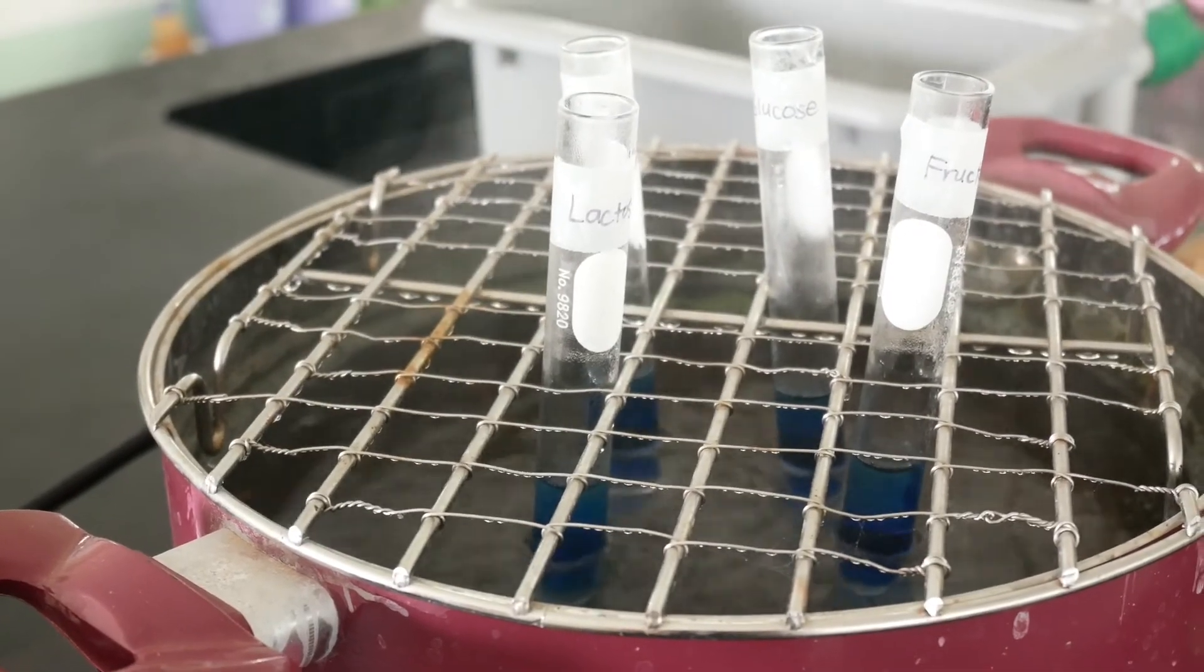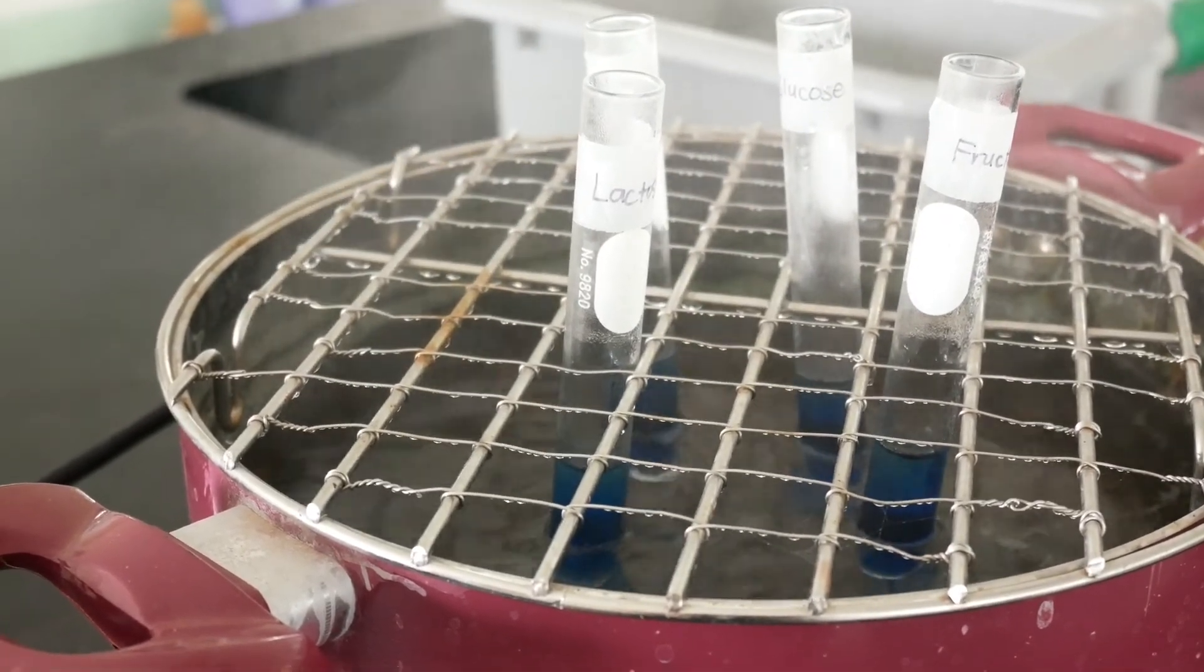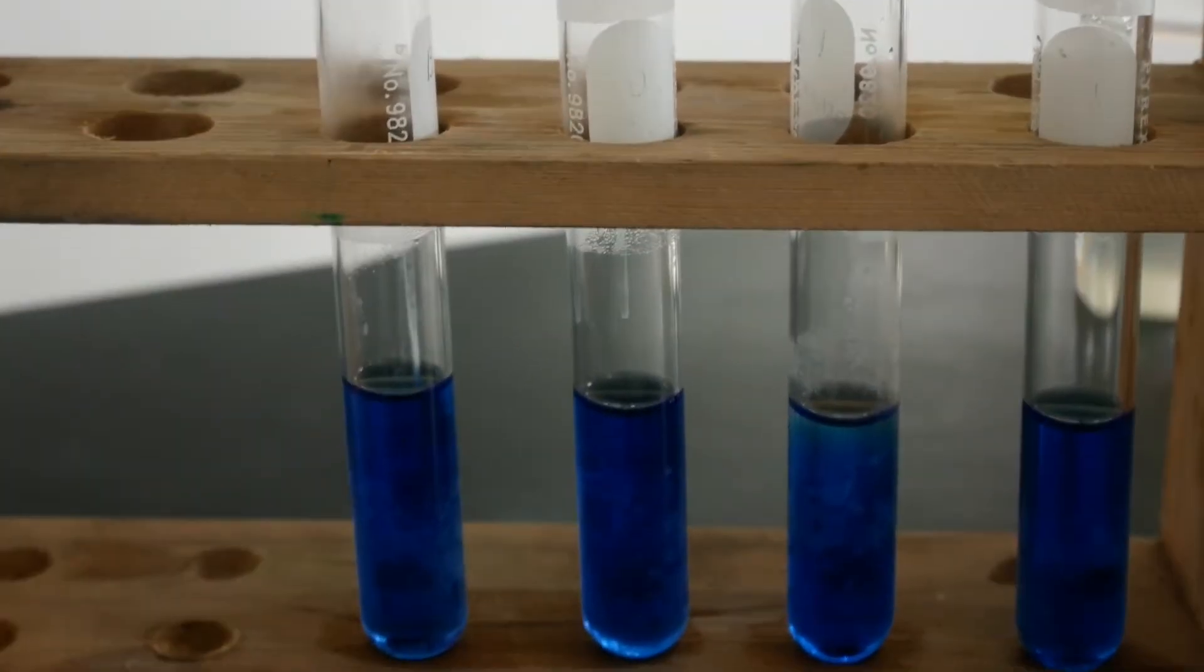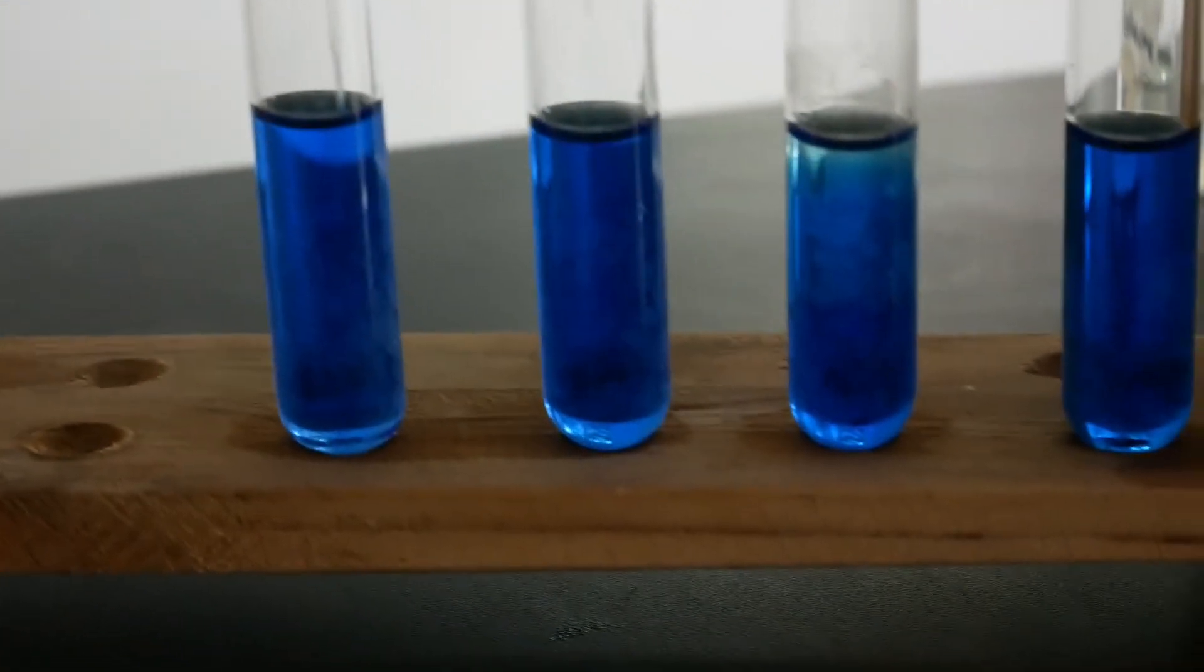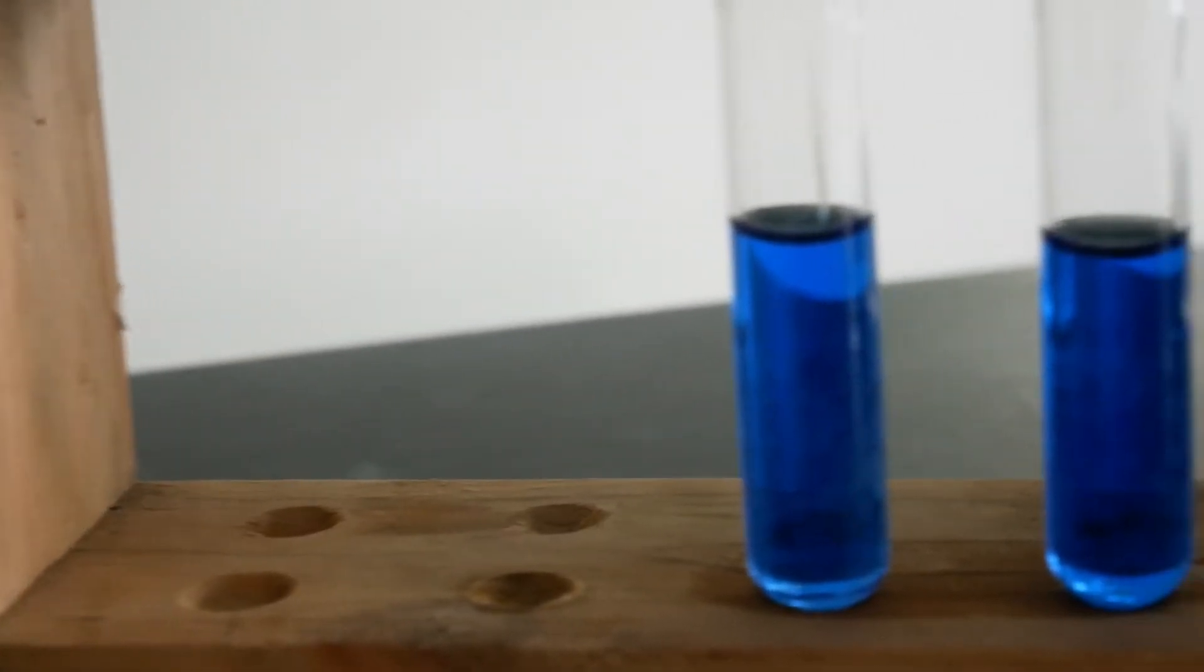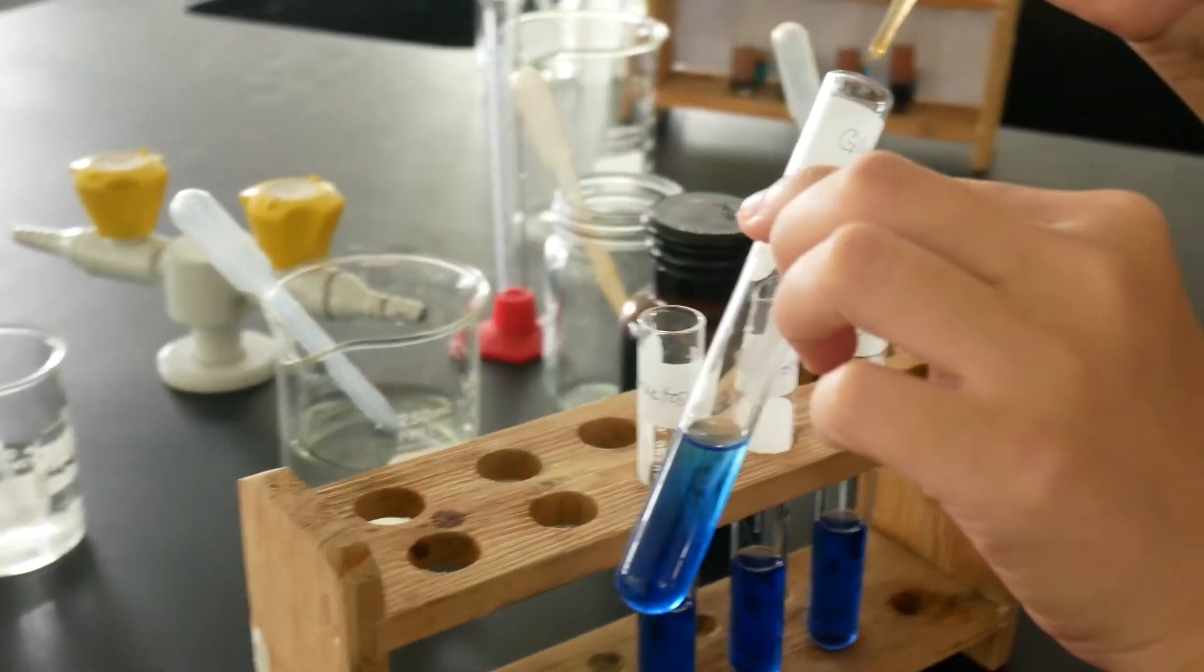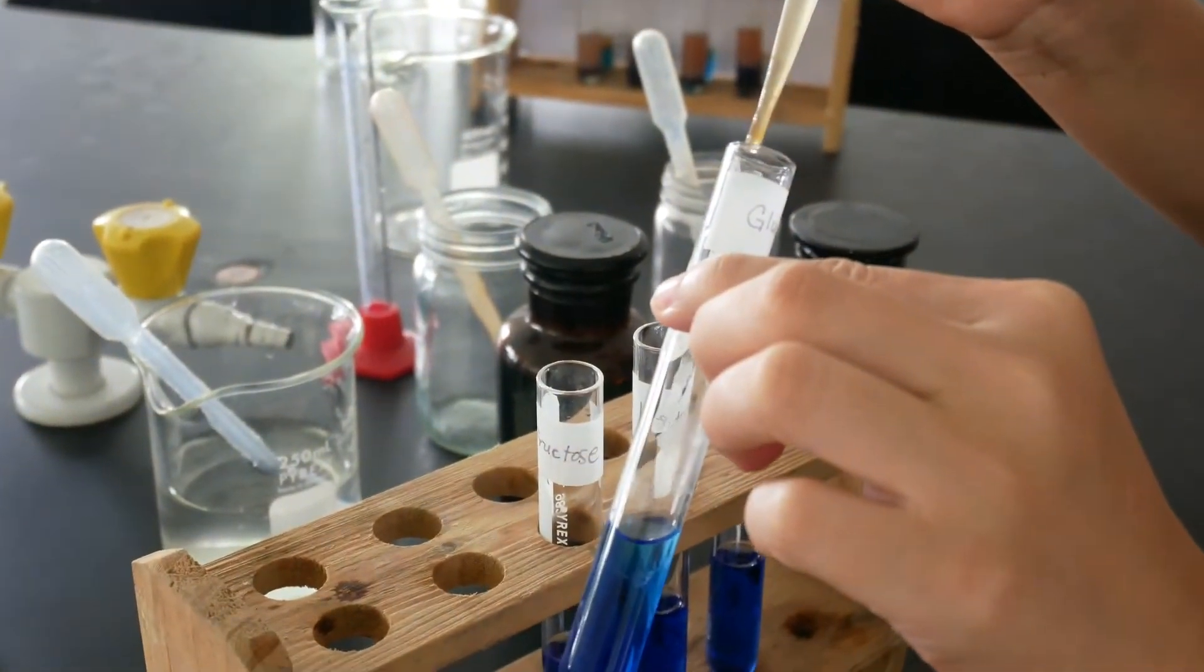After that, the 4 test tubes are placed in a boiling water bath for 1 minute. If the solution remains blue or clear blue, we are going to add 8 drops of each of the sugar solution to each of the test tubes. And then boil again the 4 test tubes with a sugar solution for another 2 minutes and note the changes in the solution.